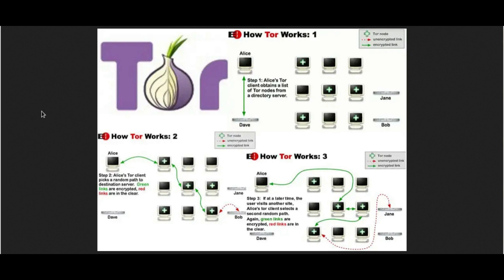First off, we're looking at the Tor Network on the screen here. What a bridge is — say your ISP, if you're in a dangerous area, watches for Tor connections. This is not something that happens often and I wouldn't worry about this for most people. But if you have that kind of concern, Tor Bridges allow you to connect to what is known as a bridge to the Tor Network, which becomes the entry guard and takes the connection into the Tor Network. It looks like, for the most part, standard HTTPS traffic, and that's how it's designed to look, of course, as well as that can be done.